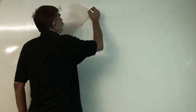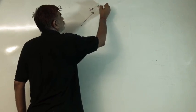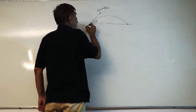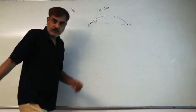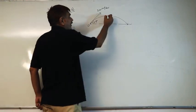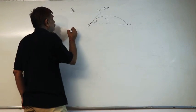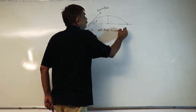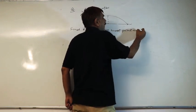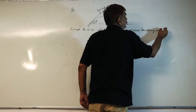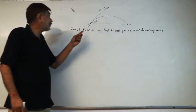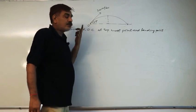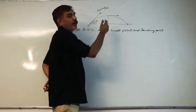Next example: suppose a particle is thrown with velocity 20 m/s at an angle of 53°. This is a case of projectile motion. We need to find the radius of curvature at the topmost point. At the topmost point, vertical velocity is zero.